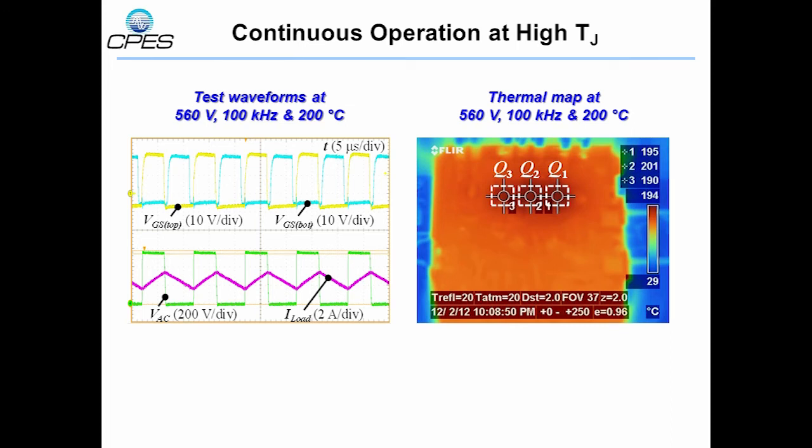The left picture shows the test waveforms of the module running at 100 kHz and 200 degrees Celsius. On the right is the thermal map of the module under this condition. We can see all three top MOSFETs have surface temperatures over 190 degrees Celsius, and the middle device has the highest temperature at 201 degrees. The junction temperature will be even higher than what was measured.